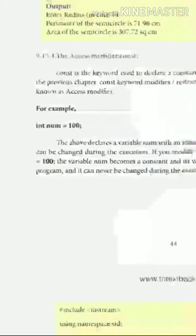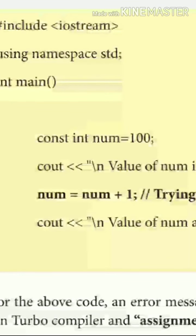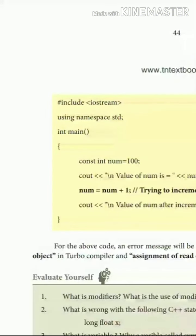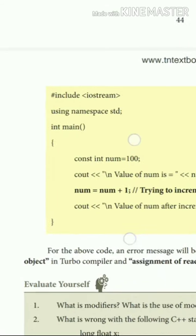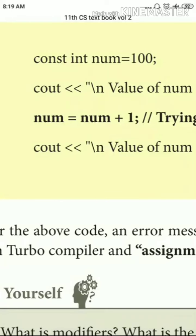Here you can see an example: int num is a normal variable, but const int number = 100 is a constant variable. The variable number is assigned the value 100 as a constant. If you then try to change its value — for example, number = num + 1 — this is an expression trying to change the value of the constant.